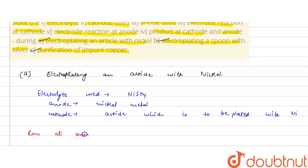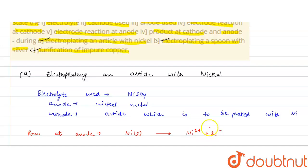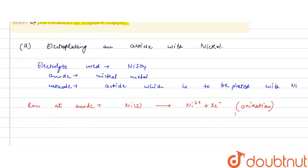The reaction at the anode: since the anode is made up of nickel metal, nickel metal dissolves to give Ni²⁺ ions and electrons are released. At the anode, the oxidation process always occurs.